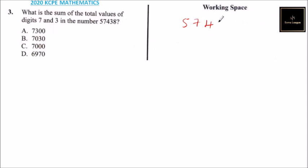If you look at 7, it is in the thousands position, so that is 7000. If you look at 3, it is in the tens position, so it is 30.